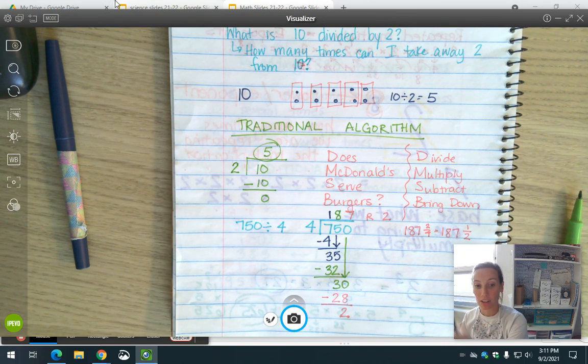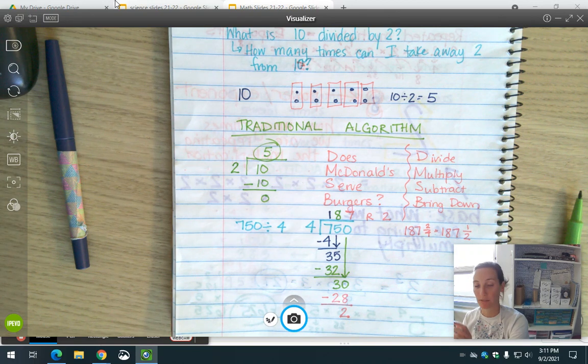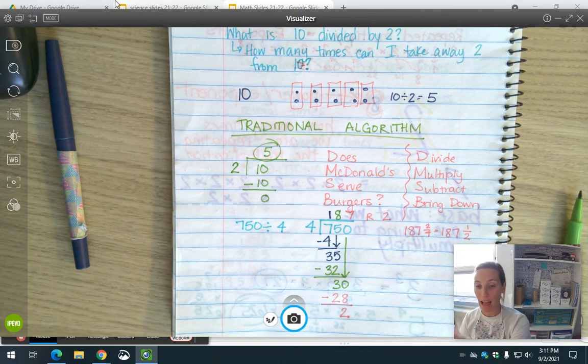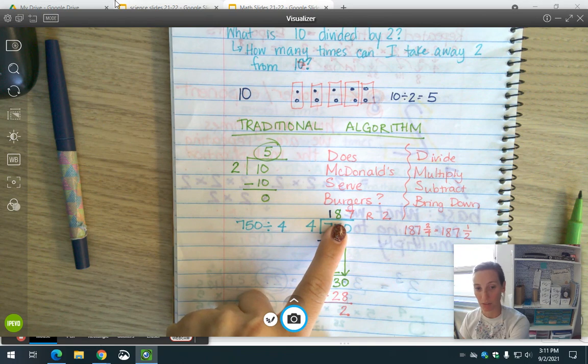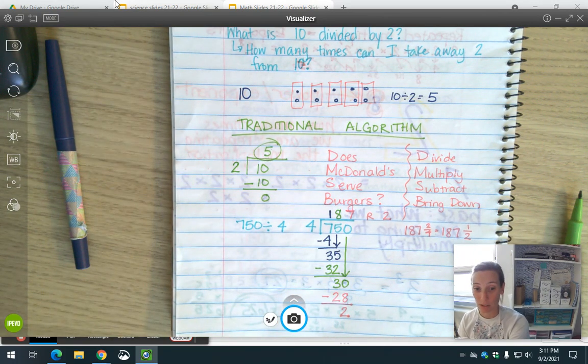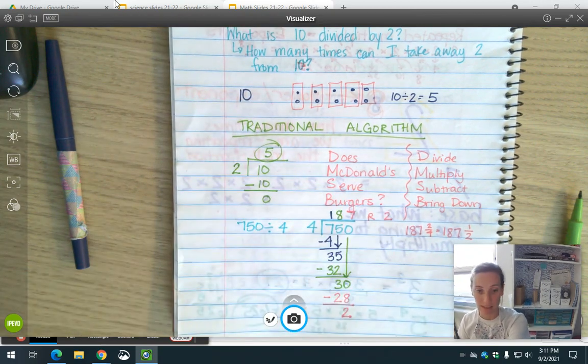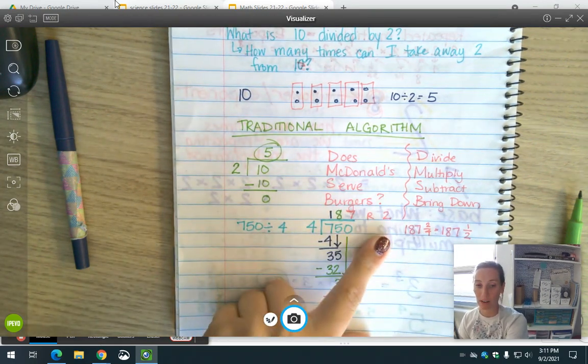Maybe I have 750 people coming to this party, I can seat 4 people at a table, how many tables do I need to order? Well if I have 187 tables, that's not enough tables for everyone, so I'm going to need to order 188 tables so that these two people have a place to sit. So what you do with the remainder has a lot to do with what kind of problem it is.